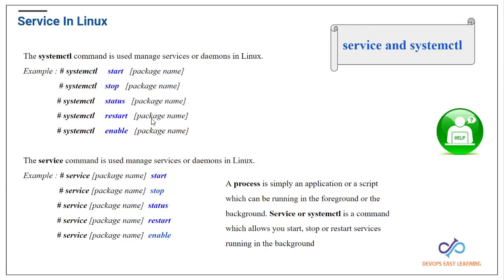In Linux, if someone reboots a web server, you want the daemon to be up and running so it keeps the web server alive. The service command works similarly — you say 'service [package] stop', 'service [package] restart', and so on. The key difference is systemctl is for newer distributions and the service command is for older ones like RHEL 6 or CentOS 6.